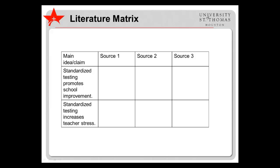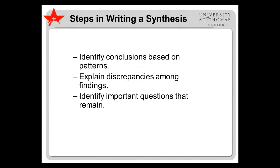In this example, each row would represent a particular idea or claim. For example, if you were writing about the effects of standardized testing in schools, two claims you might come across would be that standardized testing promotes school improvement, but that it increases teacher stress. If you had three sources covering these topics, you would describe what the findings or arguments are in each source regarding that particular idea or claim. Once you begin to see patterns, you can identify some conclusions about the topic.